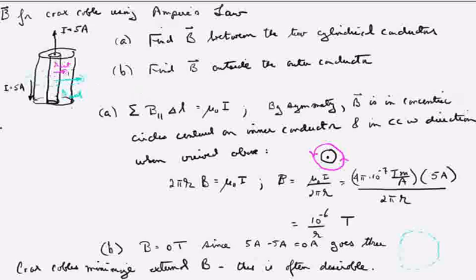And we'll use an Amperean path that goes like this. And so we know Ampere's law says that the sum of the B parallel to this path around the path is equal to mu naught, magnetic permeability, times the current going through the path.